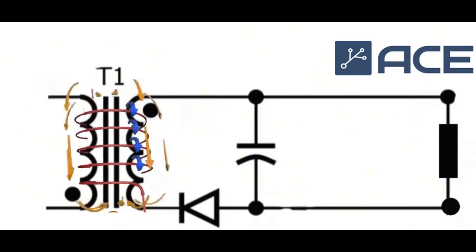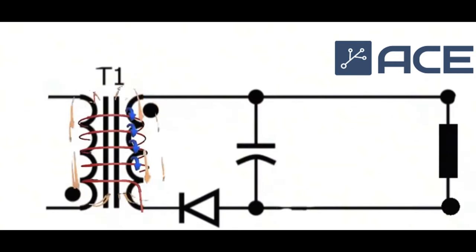Wherever there is current flowing through a conductor, a magnetic field is generated, resulting in inductance. When inductance is very small, it can be neglected.